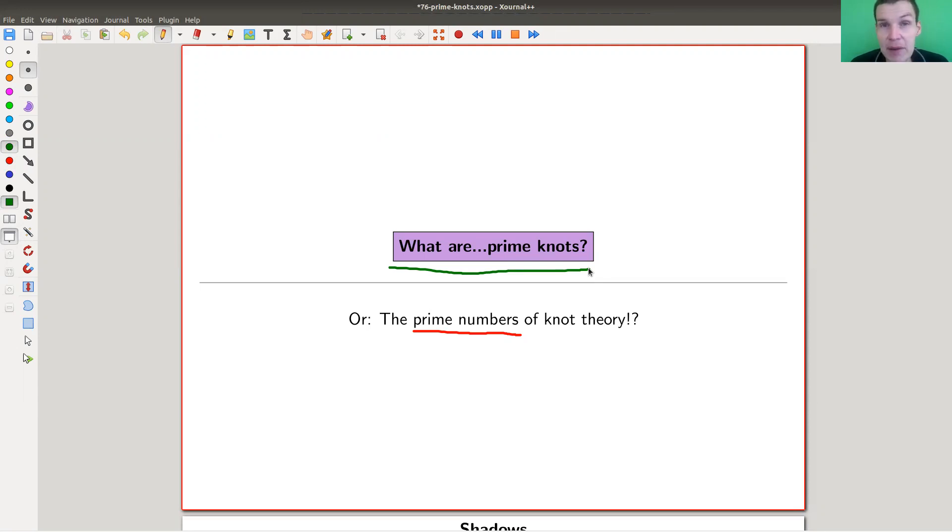And you can ask the same question actually for any type of mathematical object if you want, or maybe even for any type of object. So what are the prime factors of my theory? And for knots, it turns out that there is a very satisfying theory of prime factors, of primes, and it's given by, surprise surprise, prime knots. So let's just jump into it.